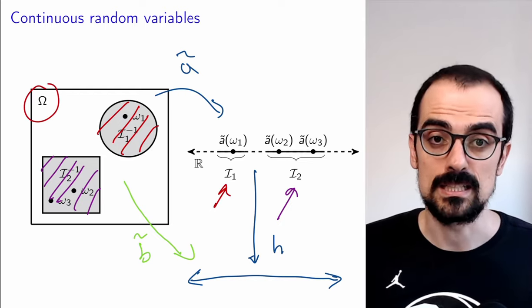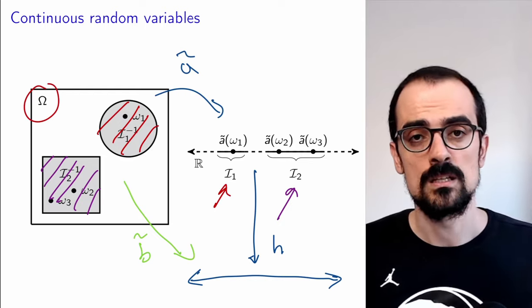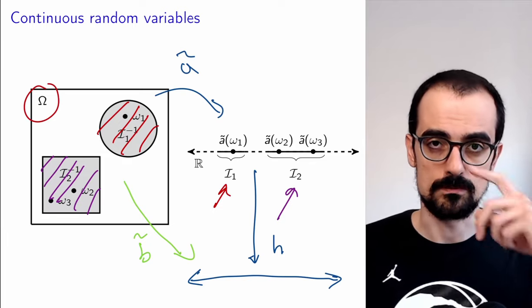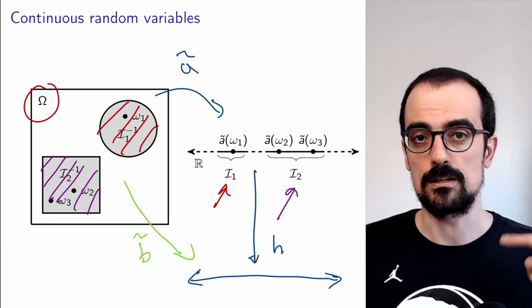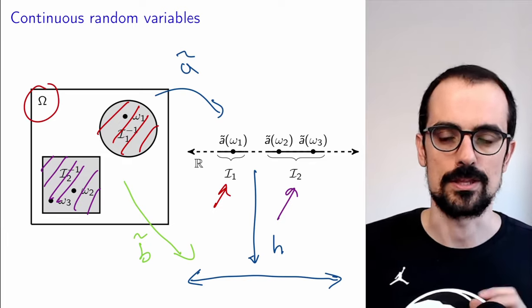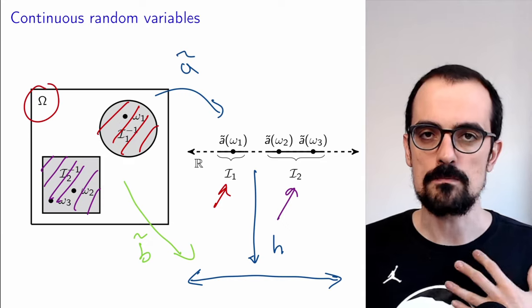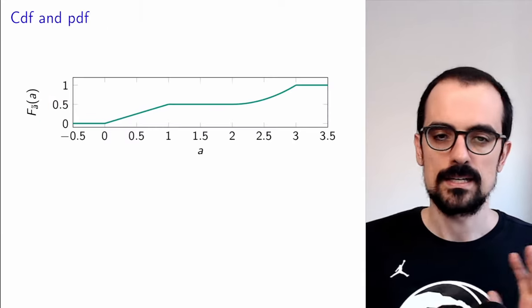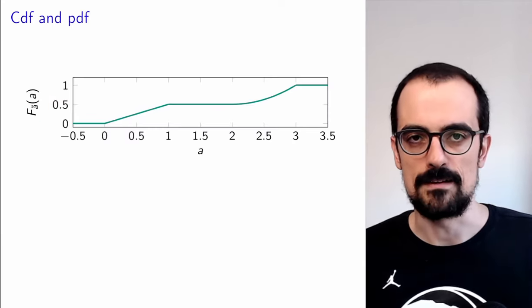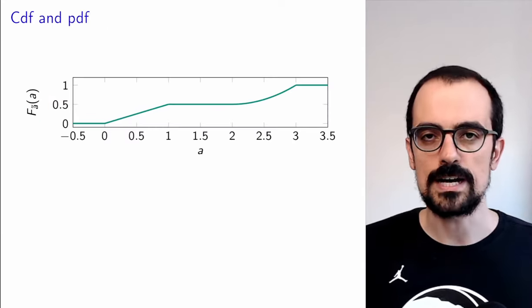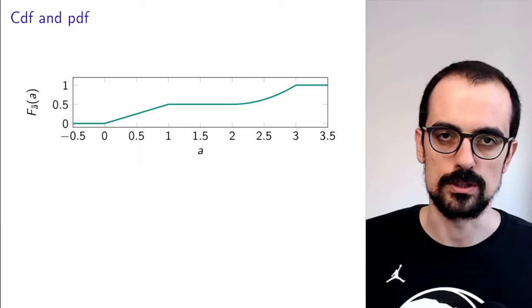If you're interested in these kinds of details, get a book on measure theory or take a course on advanced measure theory. For our purposes, in general, it is going to be a valid random variable, and that's what we're going to assume.